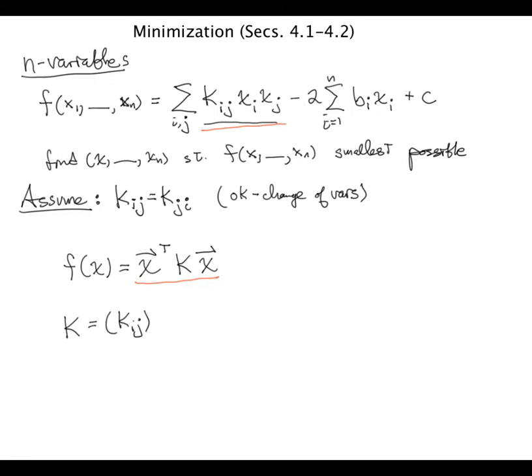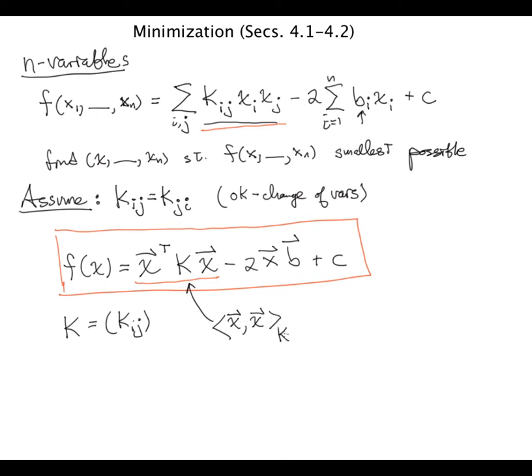And there's also a linear term, of course, which I'll write, which is just simply 2x times this vector b, where, of course, b is the vector of bi's. And then there's a constant term plus c at the end. And this is the equation that we're trying to minimize. And, of course, you all recognize that what this is is the inner product of x with itself with respect to this symmetric matrix k.